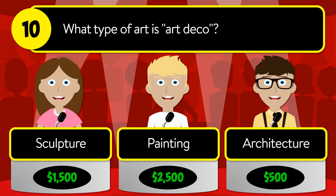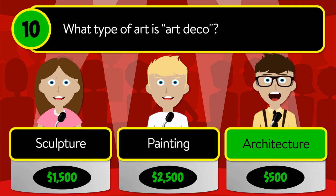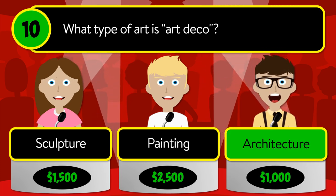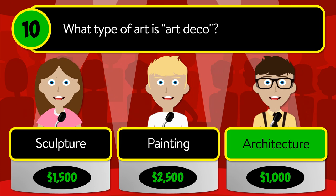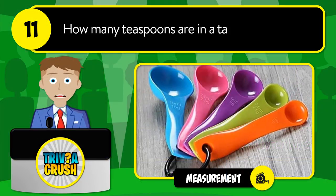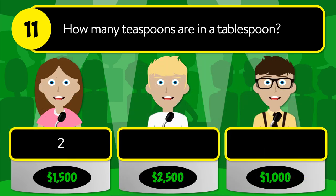Question number ten: what type of art is Art Deco? Is it sculpture, painting, or architecture? The correct answer is architecture.